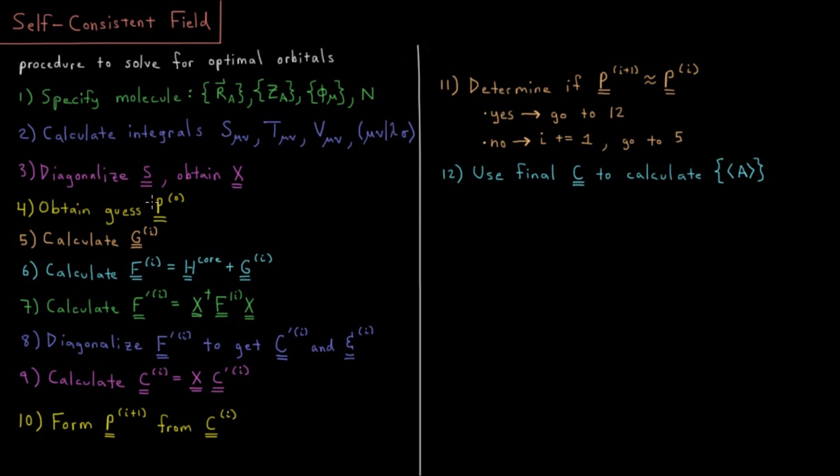And then you solve for what the orbitals would be in that case. In the case where they're not interacting with one another, you actually can directly diagonalize and solve this eigenvalue problem. So, the simplest way to get this guess density matrix is just to solve for all of the orbitals in the case where the electrons do not repel one another. There are other fancier ways to get that guess, but that's not the point of this video right now.